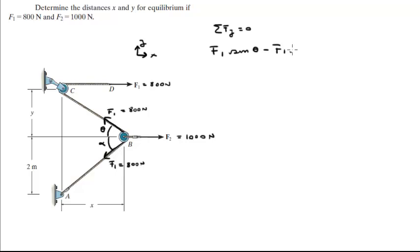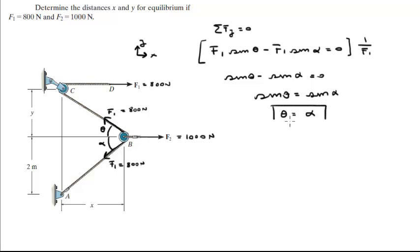Minus F1 sin of the other angle is equal to 0. So F1 and F1 are the same, you can divide this whole equation by F1 and you get sin of theta minus sin of the other angle is equal to 0. So sin of theta is equal to sin of this angle, so these angles are the same.